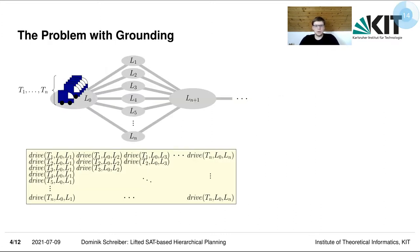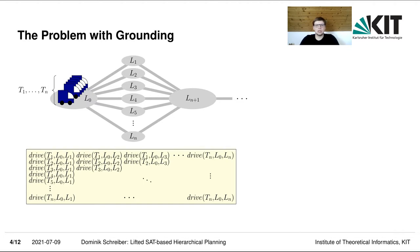In the procedure just described, the problem must be grounded first, and this is problematic in some instances. Here is a little example: we have n trucks located at location L0, and in order to solve a planning problem we need to get one of the trucks — no matter which — to location Ln+1.